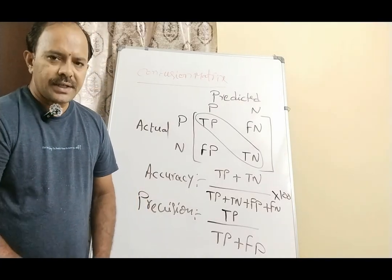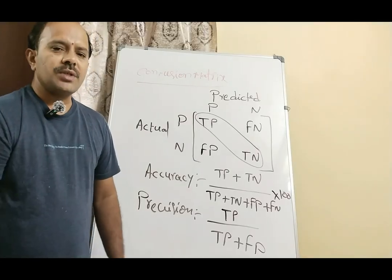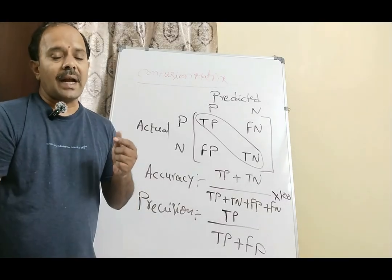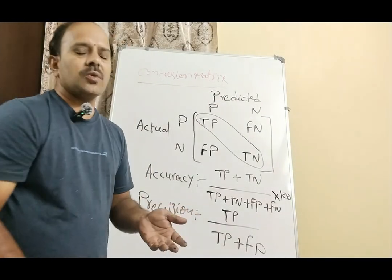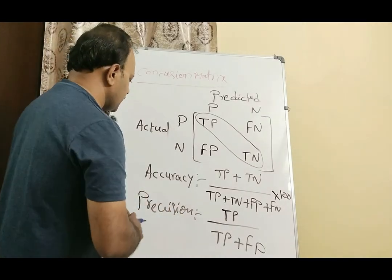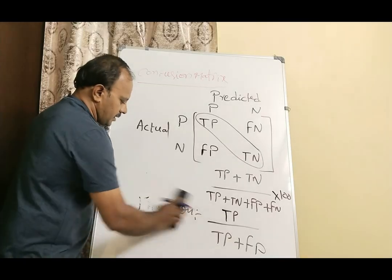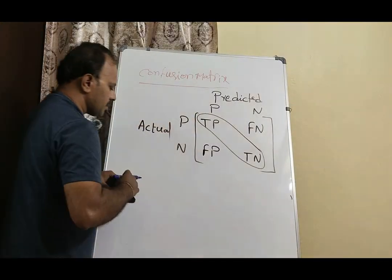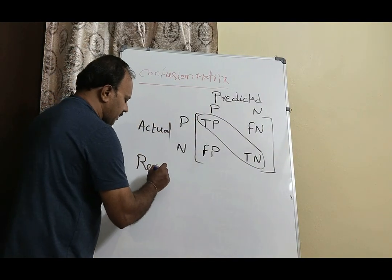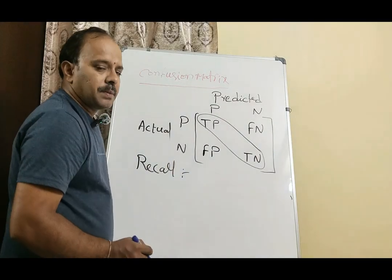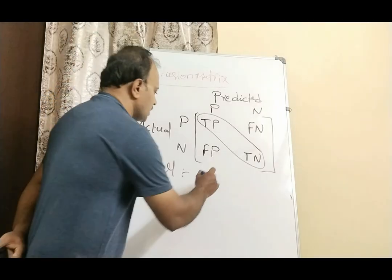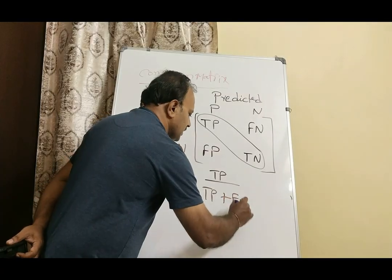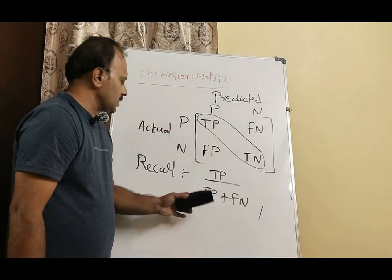One more parameter we can obtain from the confusion matrix is recall — how many positive values were correctly identified by the model. Recall is expressed as: true positive divided by (true positive + false negative).